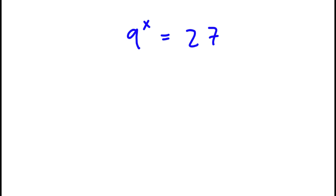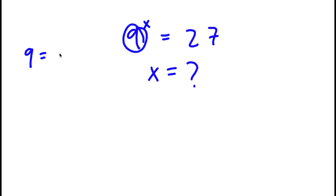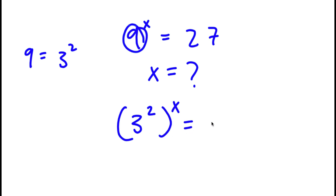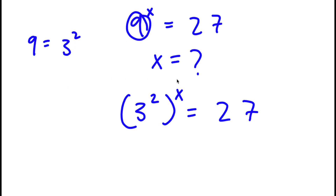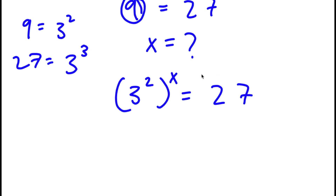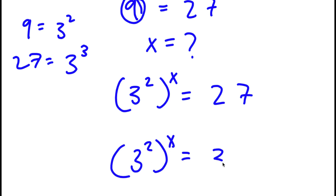In this problem I have 9 to the power of x equals 27, and I want to find the value of x. I'm first going to rewrite 9 as 3 squared, since 9 equals 3 to the power of 2. So now I have 3 to the power of 2 to the power of x equals 27. And since 27 equals 9 times 3, that means 27 equals 3 to the power of 3. So I rewrite 27 as 3 to the power of 3, giving me 3 to the power of 2 to the power of x equals 3 to the power of 3.